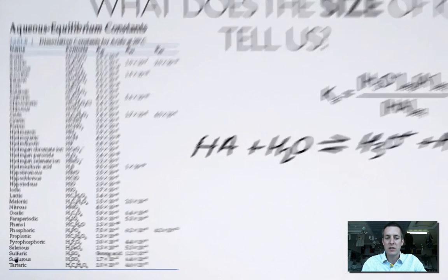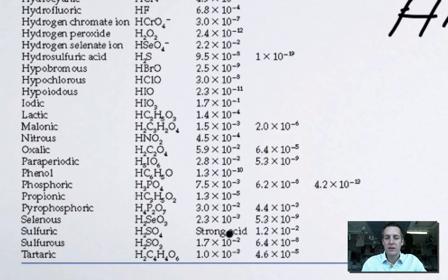The exception here is sulfuric acid. They've included its first Ka, so that's its first ionization, when it loses its first proton. But they've said it's strong, so it doesn't really have a value.